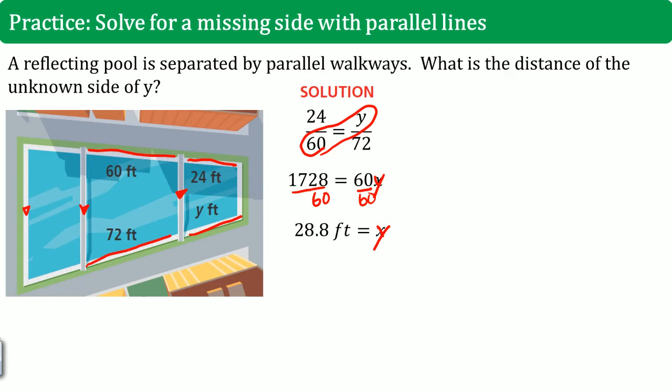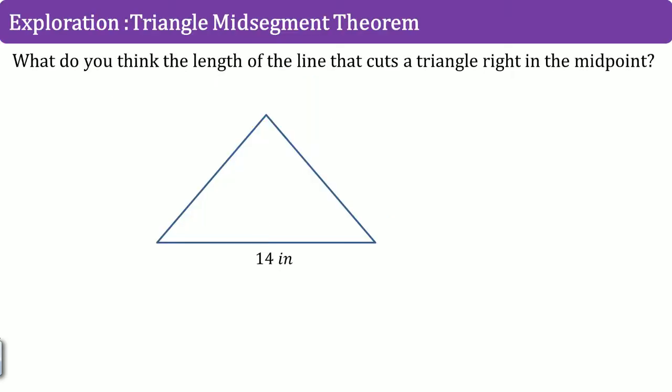So that's it for the triangle, the three parallel lines. Now we're going to move on to the next part. We'll start off with a little exploration. What do you think is the length of the line that cuts a triangle right at the midpoint? Here we saw that this is 14 inches. And we're going to cut this right here, right in the middle, right at the midpoint. The midpoint is referred to as the midsegment.